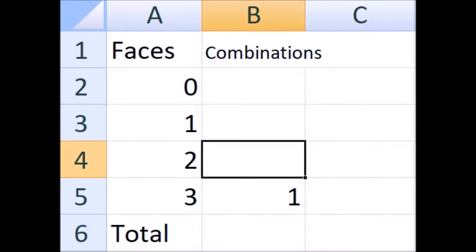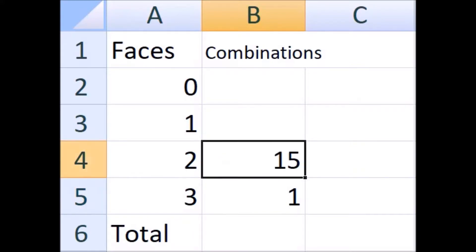How about the chosen face appearing twice? Two of the dice are six and one is something else. The something else can be any one of the five other faces, and it can appear on any one of the three dice. So the total number of ways your chosen die face can appear twice out of three dice is 5 × 3 = 15.